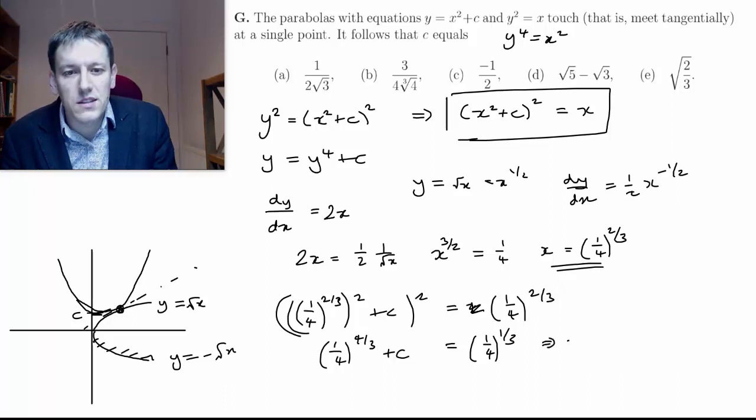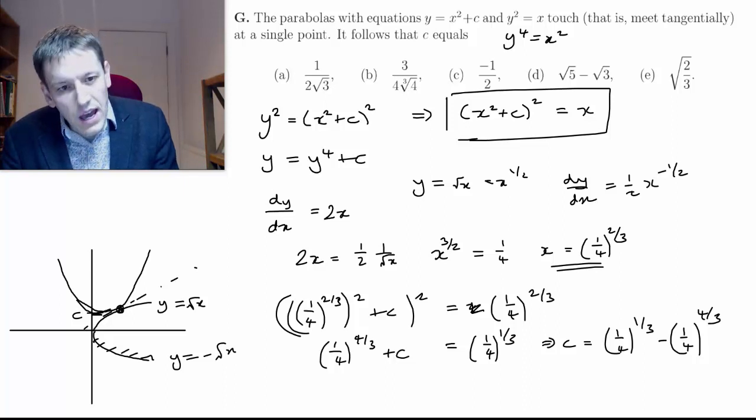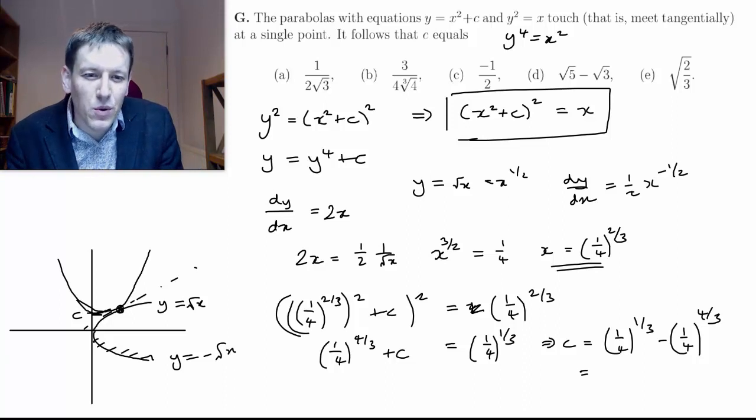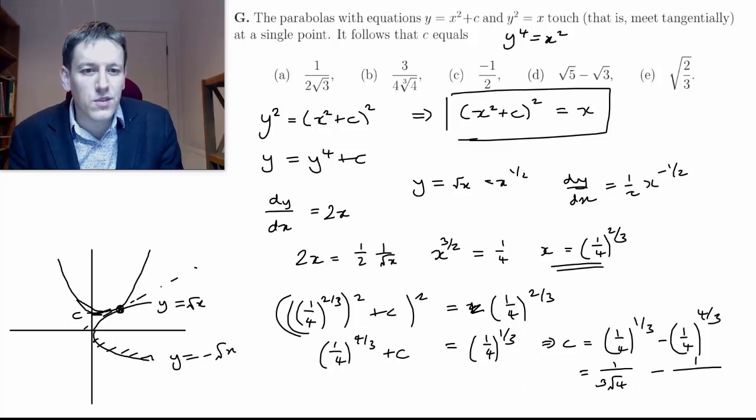So that means that c is going to be (1/4)^(1/3) minus (1/4)^(4/3). I just need to combine these now in a sensible way. So (1/4)^(1/3), that's 1 over the cube root of 4. (1/4)^(4/3), that's 1 over—well, it's just 4 to the 1 times 4^(1/3), so 4 times the cube root of 4.